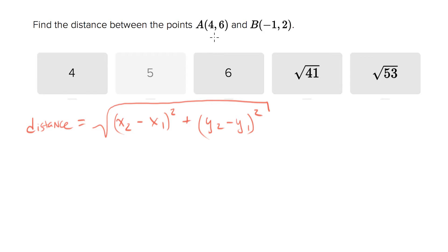All we need to do is plug in. So I'm going to call this the first point and this the second point. x2 is negative 1 minus x1 which is 4, all of that squared, plus y2 is 2, y1 is 6, all of that squared. Take the square root of all of this.